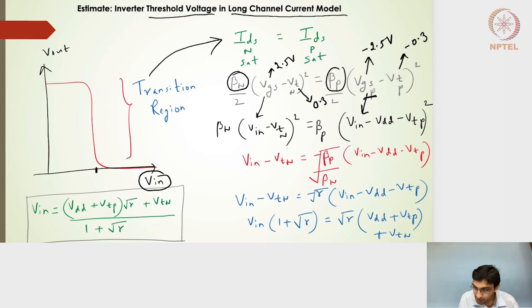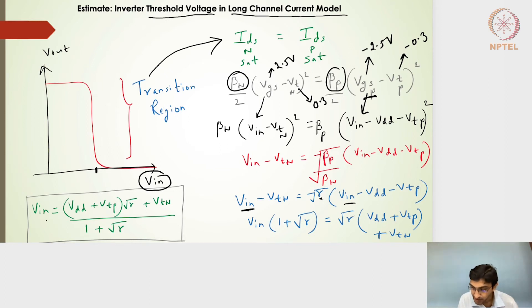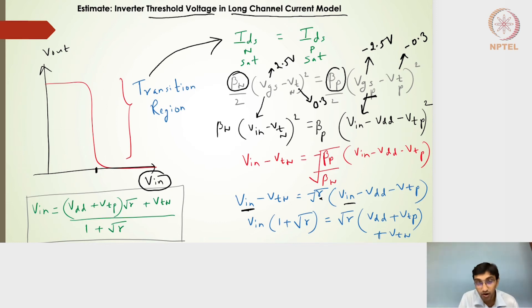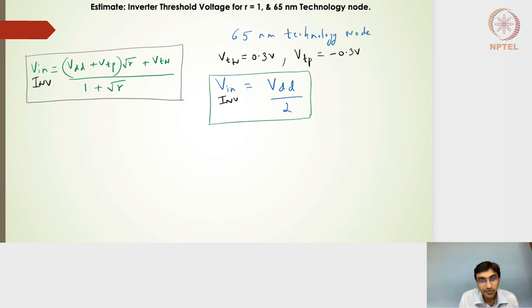Expressing βP/βN as the skewing ratio R, and rearranging by bringing VIN terms to the left-hand side, we get: VIN × (1 + √R) = VDD + VTP + √R × VTN. Dividing both sides by (1 + √R) gives the final expression for the inverter threshold voltage in terms of the skewing ratio for the long channel current model: V_inv = (VDD + VTP + √R × VTN) / (1 + √R).